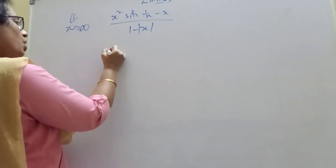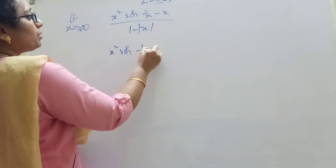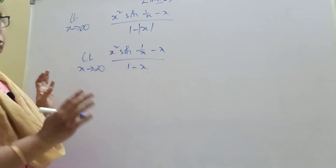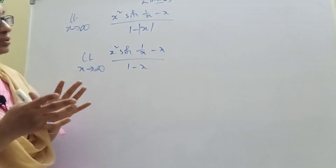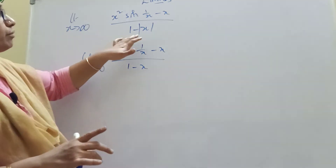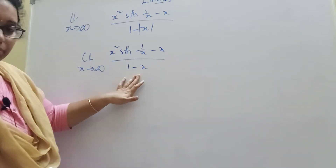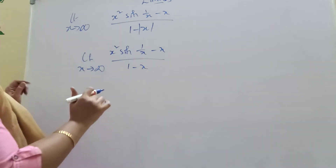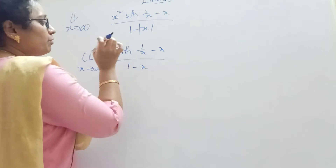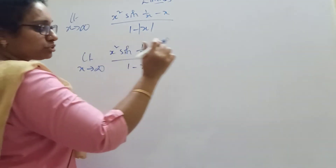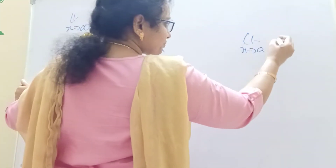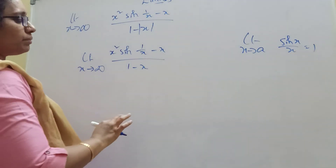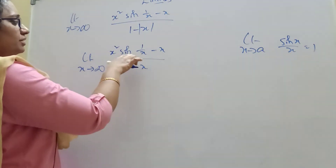And mod less x to infinity, positive values. And then 1 by x minus x by 1 minus x. Problems we'll have to do. So we'll remove mod — mod less x is equal to 0. Minus x is equal to 0. Mod less x is equal to positive values, but x is equal to 0, minus x. Plus and plus and minus x is equal to 0. Next step: sin(1 by x) is equal to 0. We'll have to do that. Limit x tends to a, sin x by x.